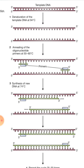First of all we have to take the DNA template which we want to amplify. Then we set the thermal cycler at a temperature of 94 degrees Celsius. At this temperature, the two strands of DNA get separated — they get denatured at 94 degrees Celsius.